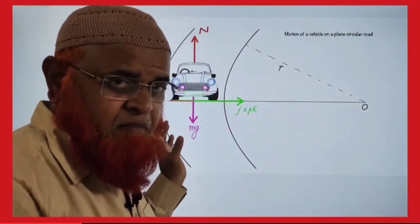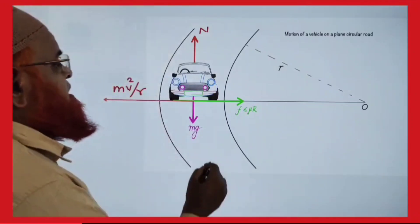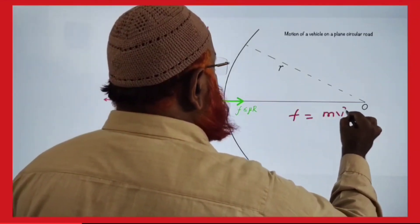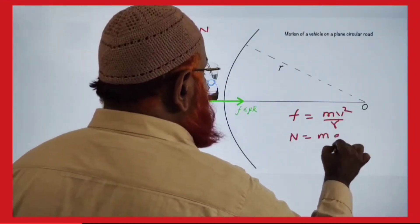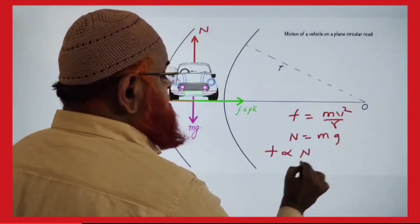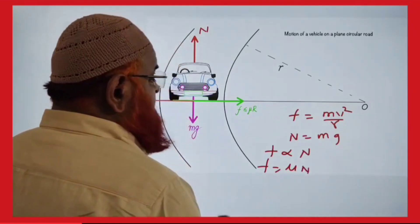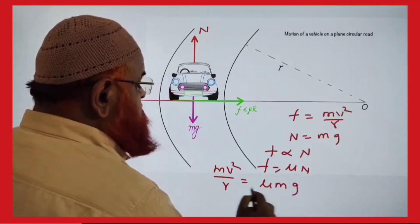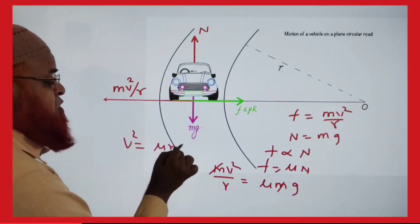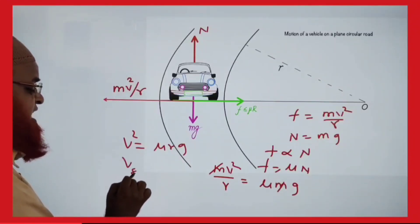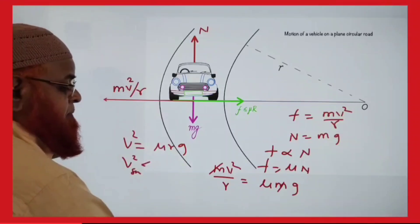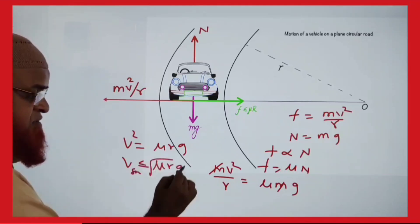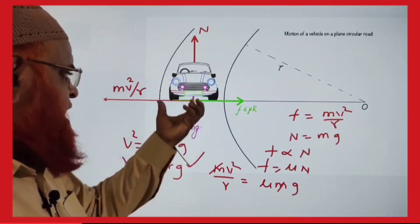Find the minimum safe velocity of a car on a circular road so it will not skid. Friction acts centripetally opposing centrifugal force mv²/r. Normal reaction balances mg. Setting friction = centripetal force: μmg = mv²/r, m cancels, so v² = μrg. Therefore safe velocity v ≤ √(μrg). If the car exceeds this velocity it will skid away.